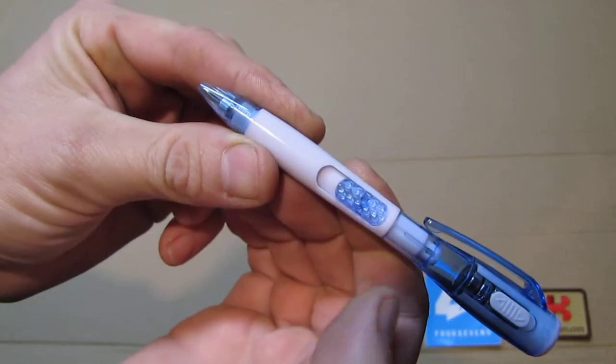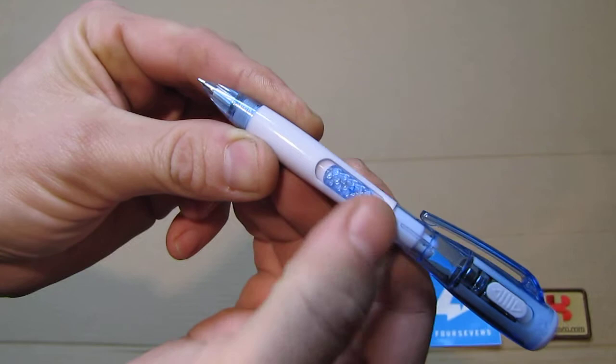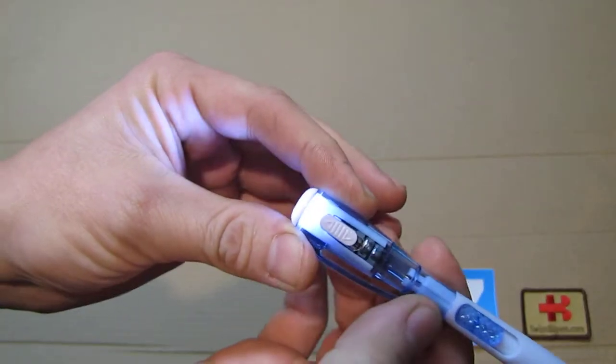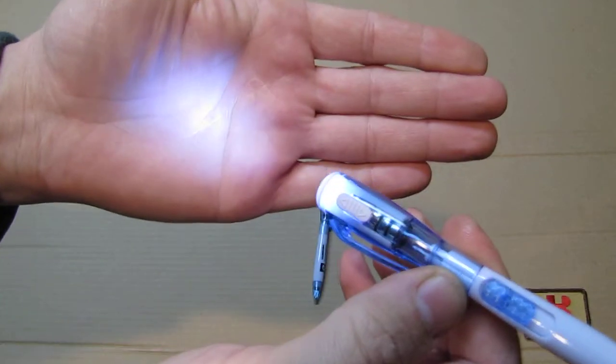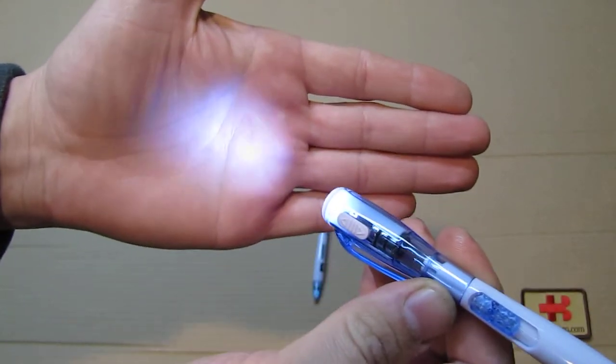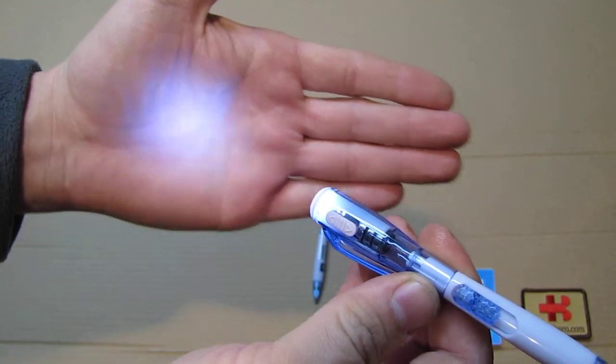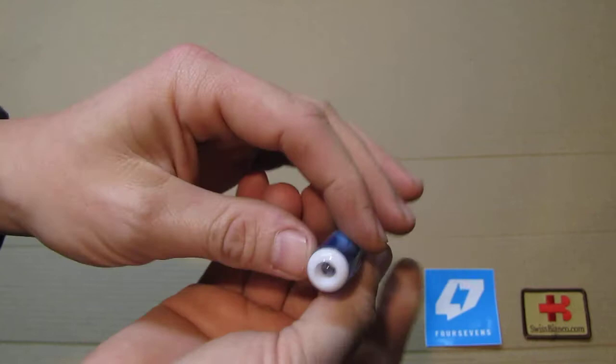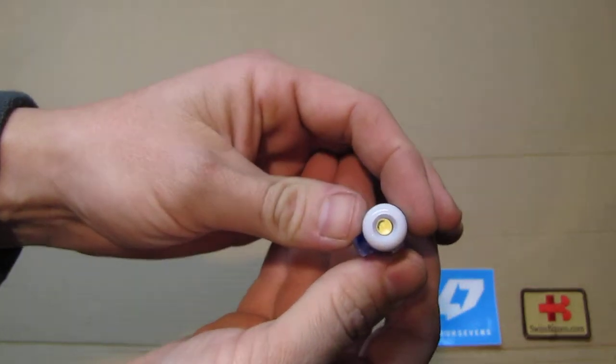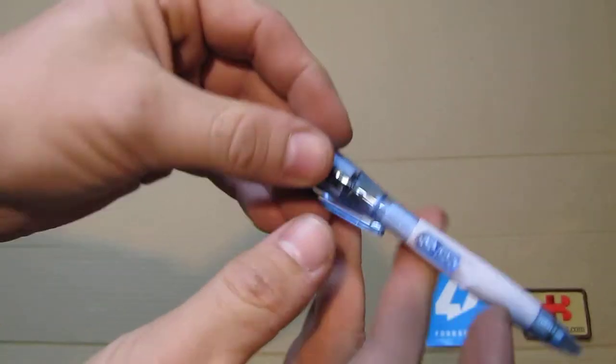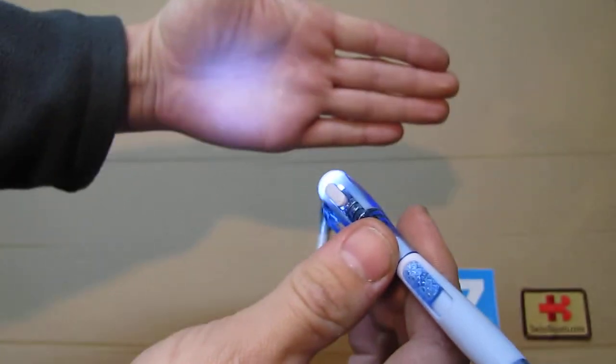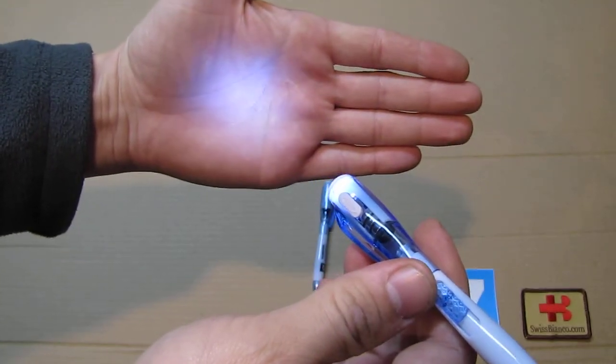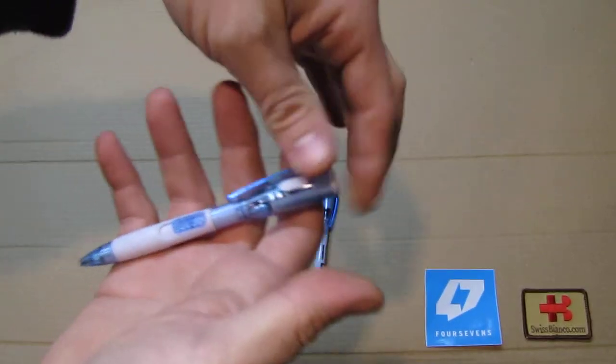On the other side we have a flashlight. Of course FourSevens is a flashlight company, so it's a combined pen with a flashlight. It's just a five millimeter LED, it's not really super bright, but still it's a pretty good output and it comes in handy many times.